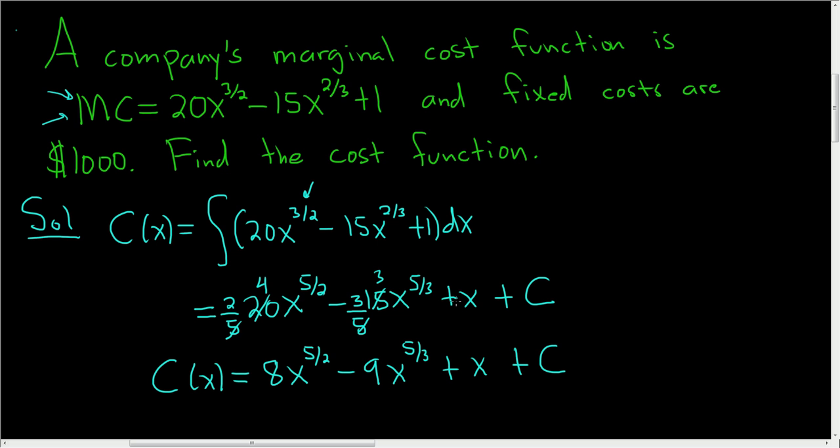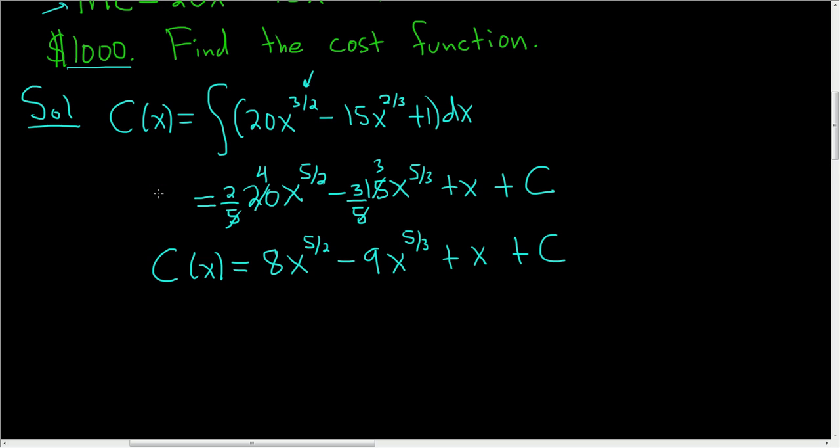Now we have to get rid of the constant. We are told that fixed costs are $1,000. So the c is going to be 1,000 and here is why. The cost to produce zero items, well, if you're not producing anything, the only thing that's going to cost you is the fixed costs. So the cost of producing zero items is 1,000. So if you plug in zero here, you get this. And this is the cost of producing zero items. So this is just the fixed cost. So all of this goes away because it's zero. So you just get c equals 1,000.